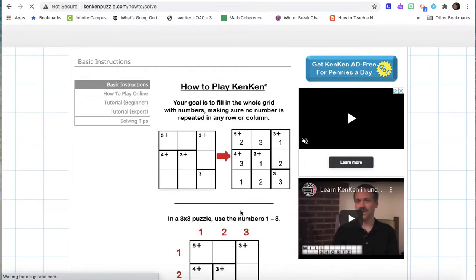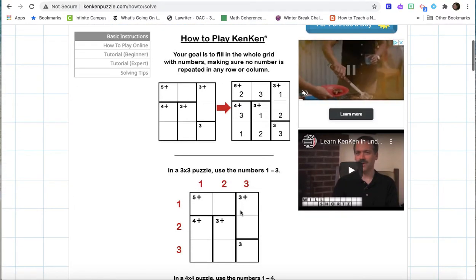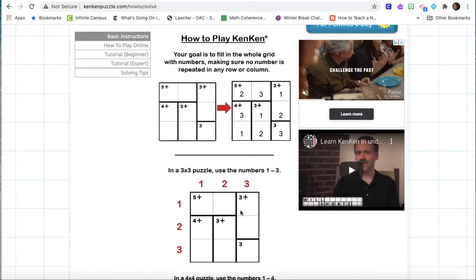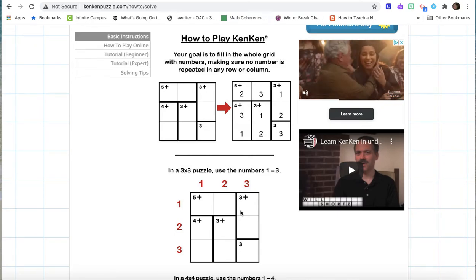So let's look at the example. Your goal is to fill in the whole grid with numbers, making sure no number is repeated in any row or column.